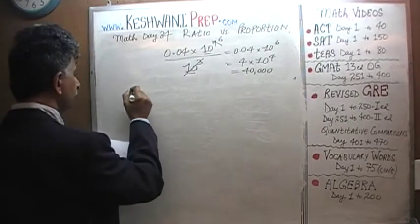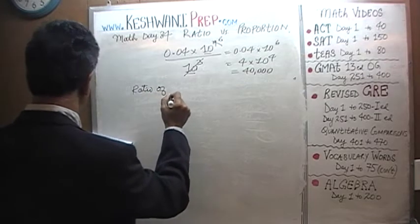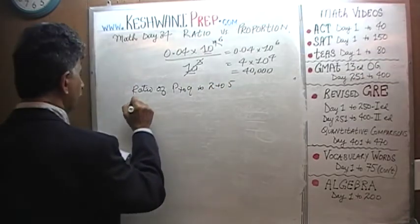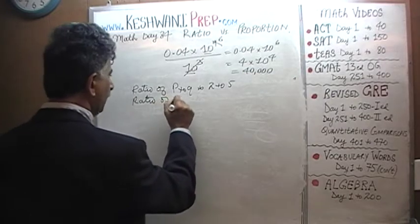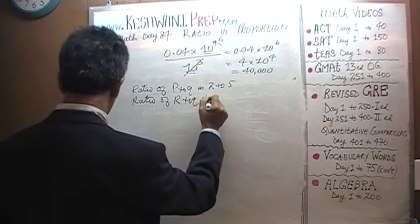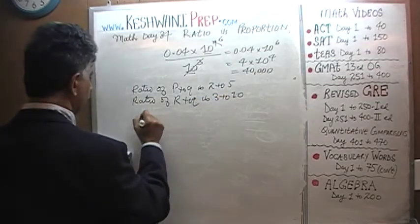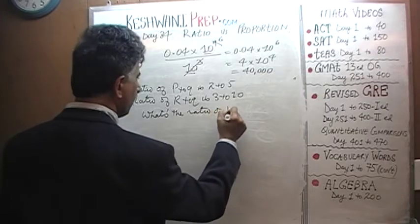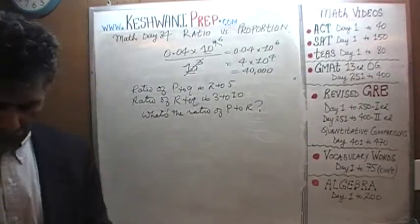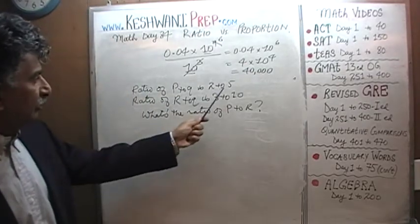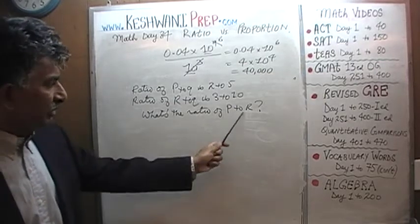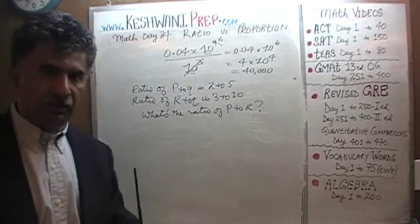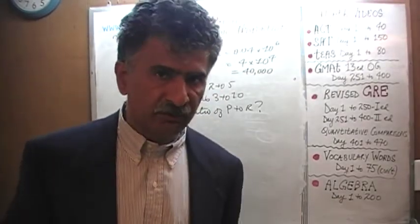We are told that the ratio of P to Q is 2 to 5. We are also told that the ratio of R to Q is 3 to 10. What's the ratio of P to R? I want you to pause the video and do the problem yourself. I'm going to give you 5 seconds to pause and unpause the video, then compare your work against the work that you and I will do together.